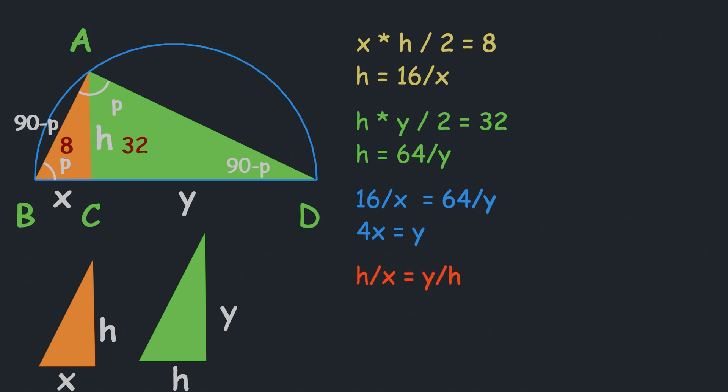Multiplying both sides by hx, we get h² = xy. We can replace y with 4x in this equation to get h² = 4x². Taking the square root of both sides gives h = 2x.